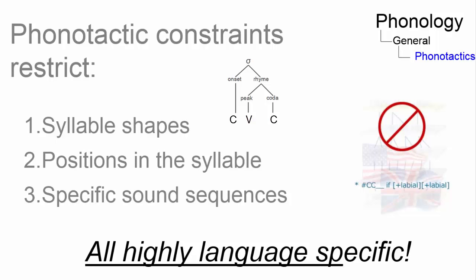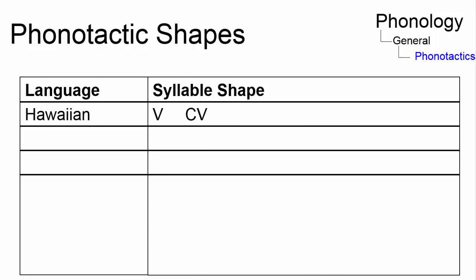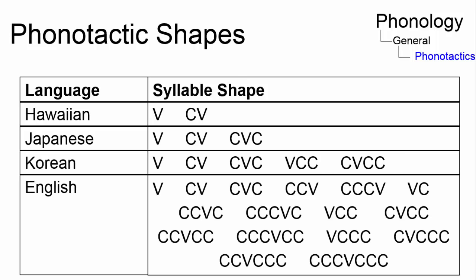These constraints are highly language specific, as shown in the permissible syllable structures in Hawaiian, Japanese, Korean, and English.